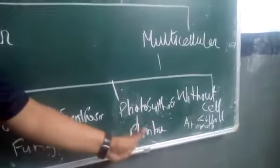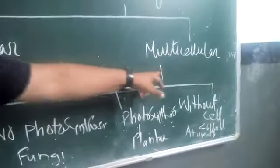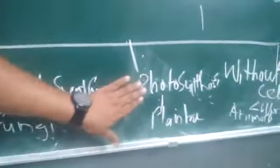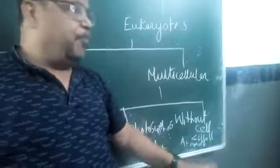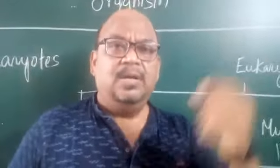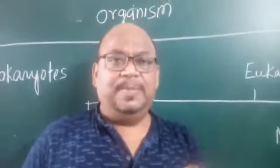Photosynthesis means chlorophyll is present. So among multicellular organisms, we divide them into those with a cell wall and those without. With a cell wall, there are two groups: those that cannot perform photosynthesis, called fungi, and those that can, called plants. Without a cell wall, there is the group of animals. Animals have a cell membrane, not a cell wall.